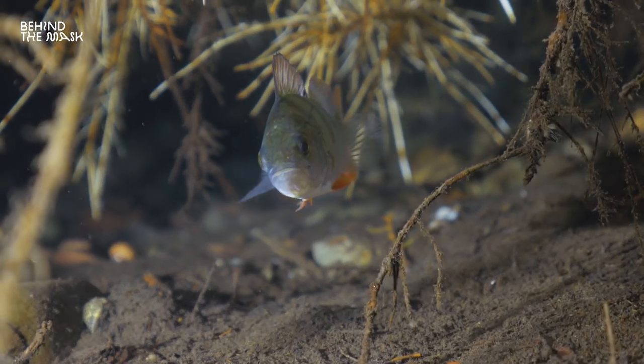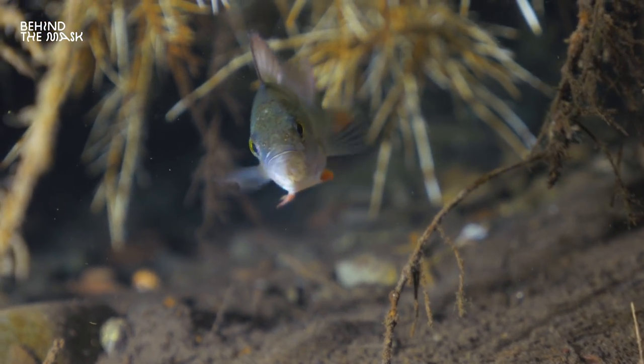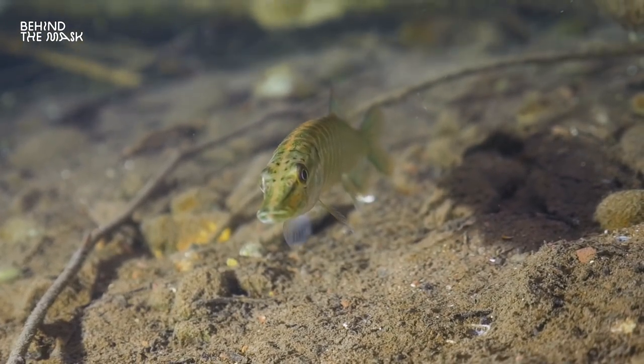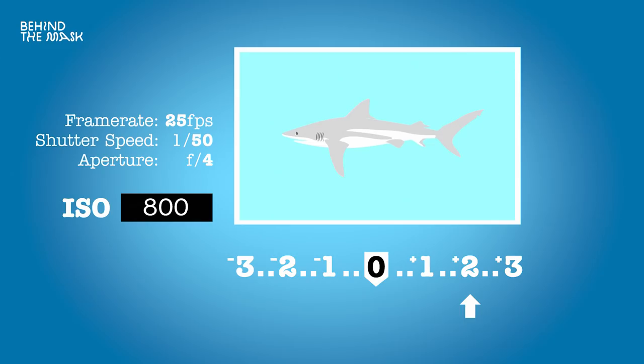Then I set my shutter speed to double my frame rate because of the 180-degree shutter angle rule. I usually film at 60 frames per second, so my shutter speed is 1/120 of a second. I have these settings dialed into custom function buttons. Then I determine what look I want — background in focus or out of focus, underwater landscape or a specific marine creature — so I set the aperture for the desired depth of field, as covered in the aperture episode.